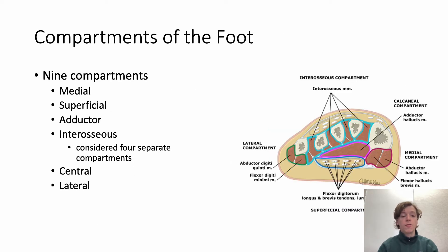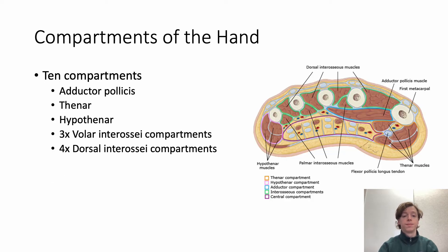The foot contains nine compartments: medial, superficial, adductor, and four separate interosseous compartments, as well as a central and a lateral. The hand has ten compartments: adductor pollicis, thenar, hypothenar, three volar interosseous compartments, and four dorsal interosseous compartments.